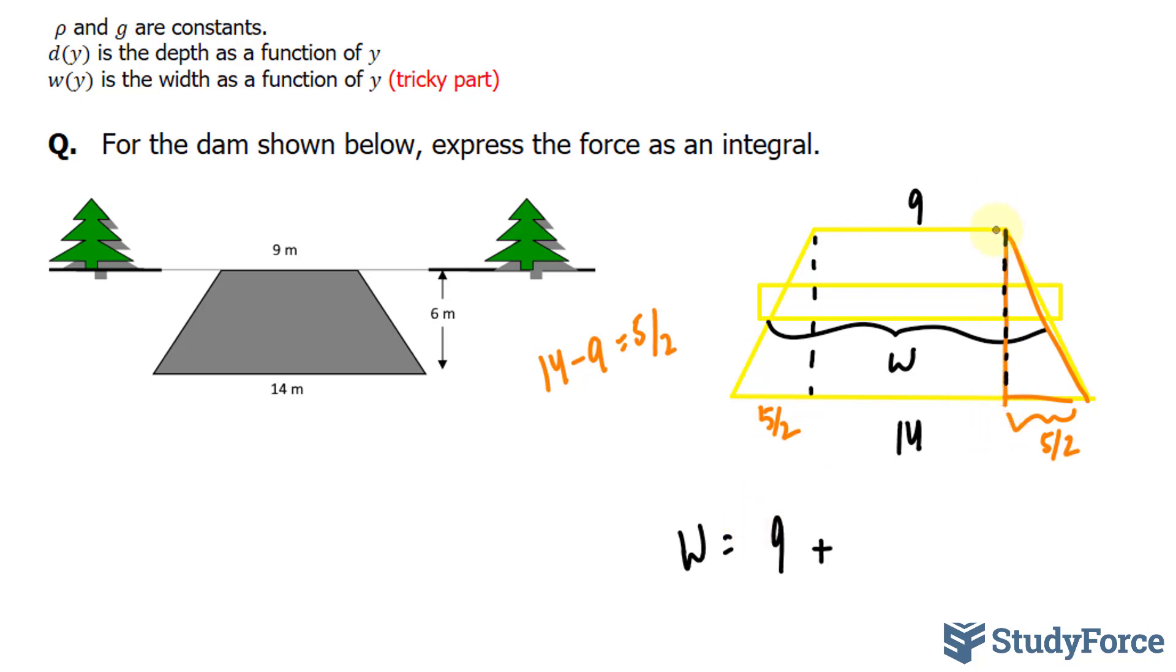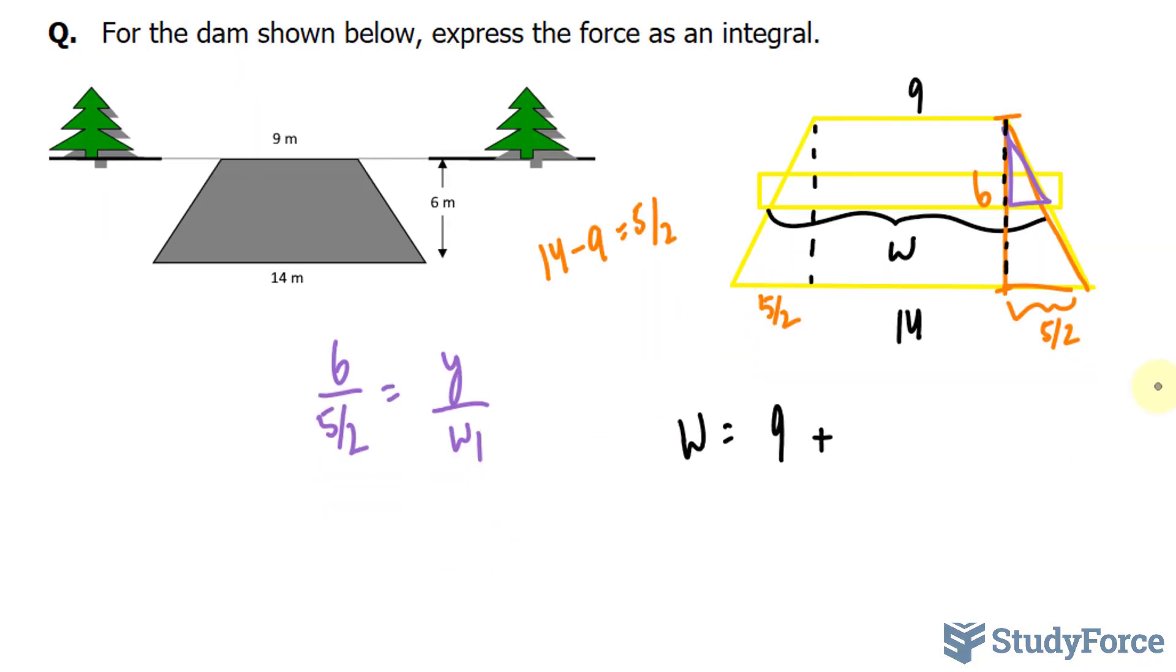I know the height of this triangle, it's 6, because that was given in the question, so what I will do to compare this right triangle with this smaller one is use ratios. The bigger of the two is 6 over 5 over 2, height, compared to the side here, and this part I'm going to call y, because I don't know what that is for the smaller triangle, and I'm going to call its width w1, because w is already taken.